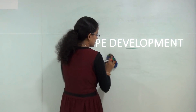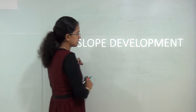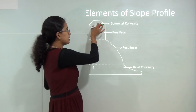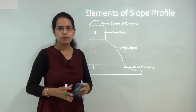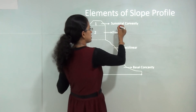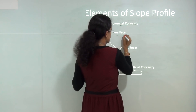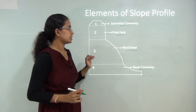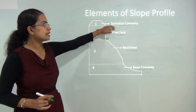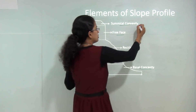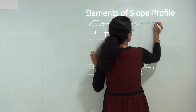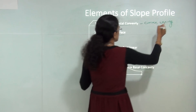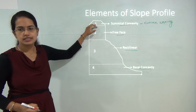For slope development, we can classify the elements of slope into four parts: the summit convexity, the free face, the rectilinear face, and the basal concavity. Summit convexity is a convex slope and it is waxing in nature — that is, it is eroding in nature — and this is found towards the hill top.